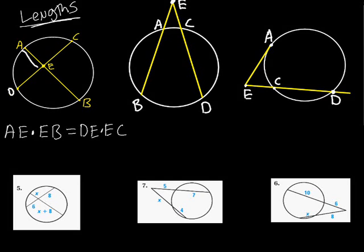For this situation here where we have two secants, it's going to be quite similar. We're going to end up having AE times EB will end up equaling EC times CD. This times this will equal this times this.